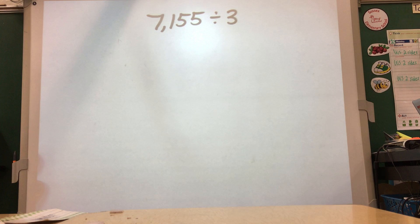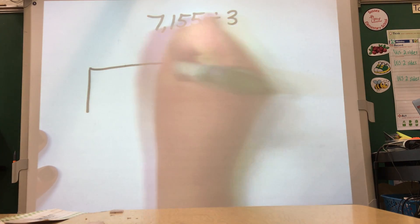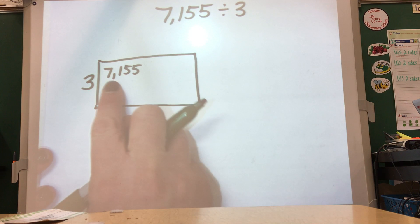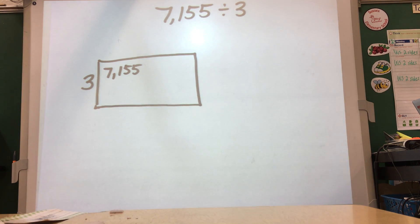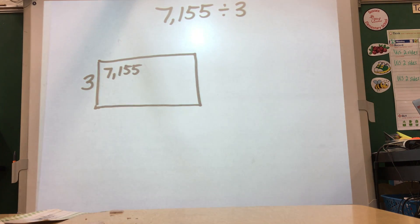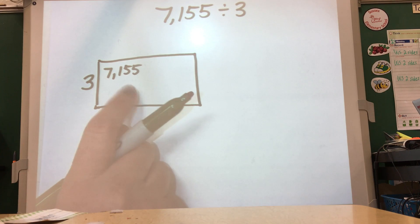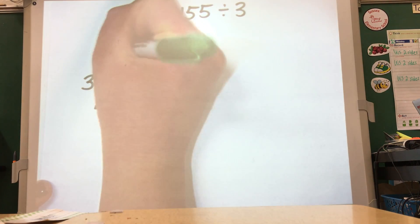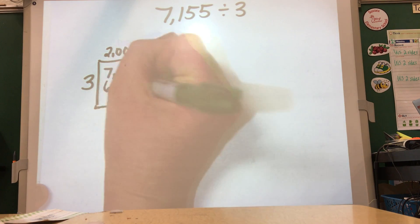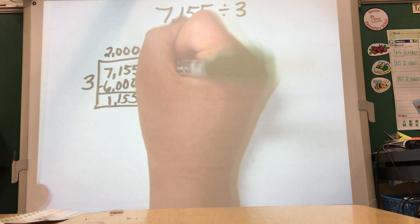Right away, I'm noticing this is in the thousands, so we're going to be pulling out large groups of three and the answer is going to be pretty large. Starting with the area model — three times what will give me something close to 7,155? I know three times 2,000 is 6,000, and I can still have some leftover. I can't go to three times 3,000, which would be 9,000 — I can't take away 9,000 without going into negative numbers. So I'll do 2,000 this time. Three times 2,000 is 6,000, and I'll have 1,155 left.